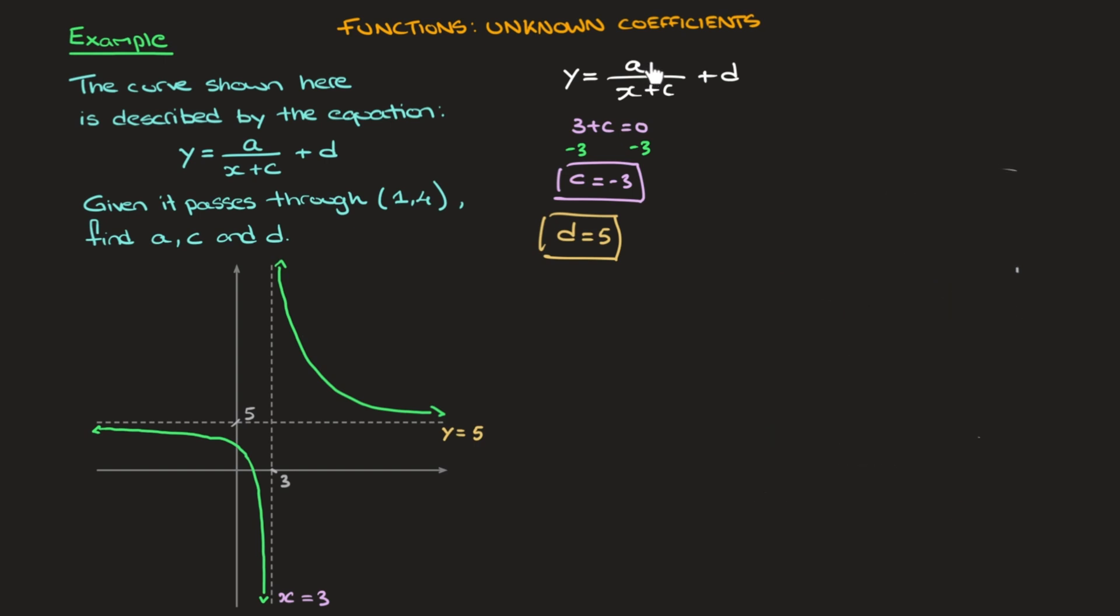Let's find the unknown coefficient a. Well, first of all, now that we know that c is equal to negative 3 and d is equal to 5, we can already rewrite this function's equation as y equals a over x minus 3 plus 5. And now to find a, we use this important bit of information that's given to us in the question. And that is the fact that the curve passes through the point with coordinates (1,4). To find a, all I have to do is replace any x I see inside this function's equation by 1 and replace y by 4. Then I solve for a. And here's what that looks like.